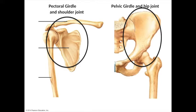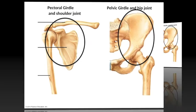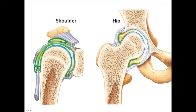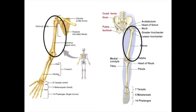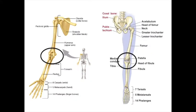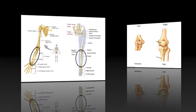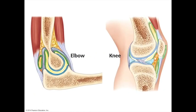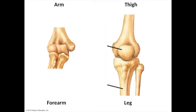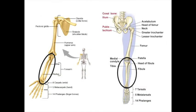The shoulder joint attaches the arm to the scapula, and the hip joint connects the thigh to the hip bone. The arm and thigh each have a large single bone, which distally are attached to two relatively thinner bones. For the upper limb, this attachment of arm and forearm occurs at the elbow joint, and for the lower limb, the attachment of thigh and leg occurs at the knee joint. These are the proximal attachment points for the two smaller bones of their respective limbs.